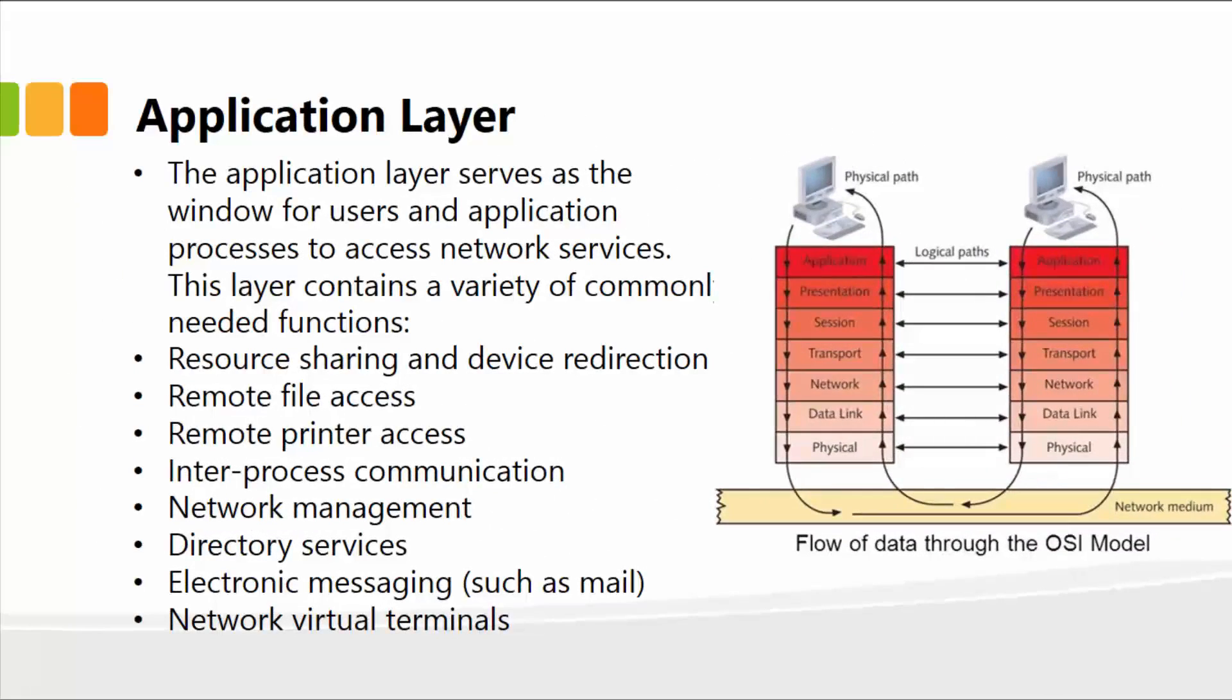And finally, we have the application layer, which serves as the window for users and application processes to access network services. This layer contains a variety of commonly needed functions. Those functions include resource sharing, device redirection, remote file access, printer access...